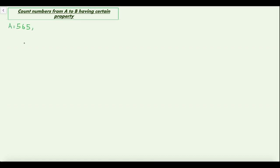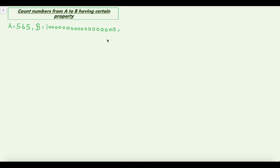Hi, this is GoCode. In this video we will see how to solve problems in which we are given some range a to b and we need to count numbers in the range having certain property. Let's take an example problem in which a = 565 and b = 10^18, and we need to count numbers whose sum of digits equals 81 in the range of a to b.